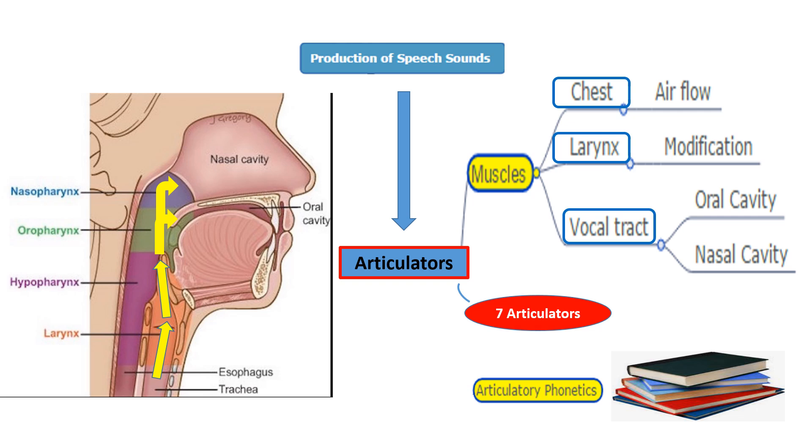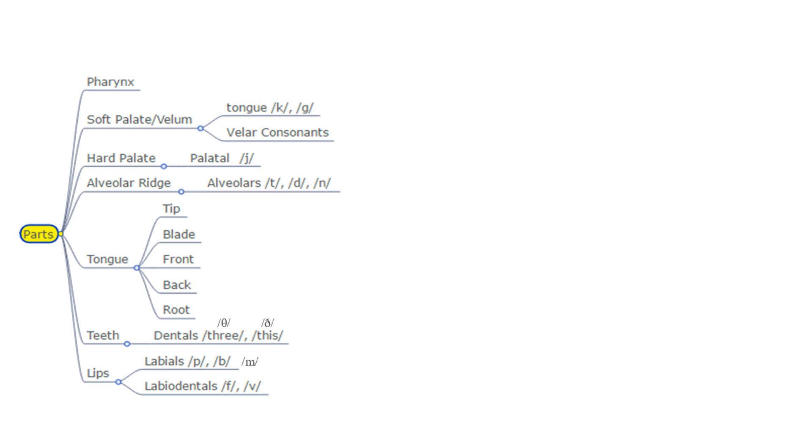There is a set of seven main articulators. The study of these articulators is called articulatory phonetics. These are the organs or the parts responsible for producing sounds.